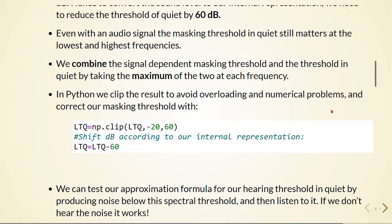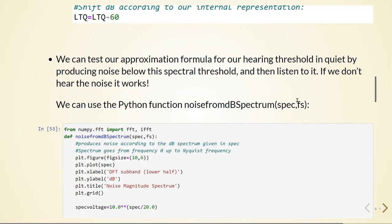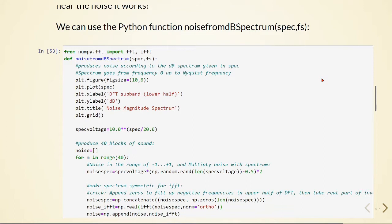In Python we clip the results to avoid overloading and numerical problems, and to correct our masking threshold using this clip function. We are also shifting the dB according to our internal representation. We can test our approximation formula for the hearing threshold in quiet by producing noise that is below this spectral threshold and then listening to it — if we don't hear the noise, it means it's a good approximation.